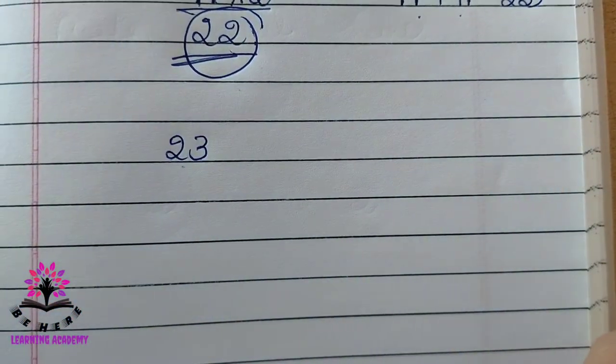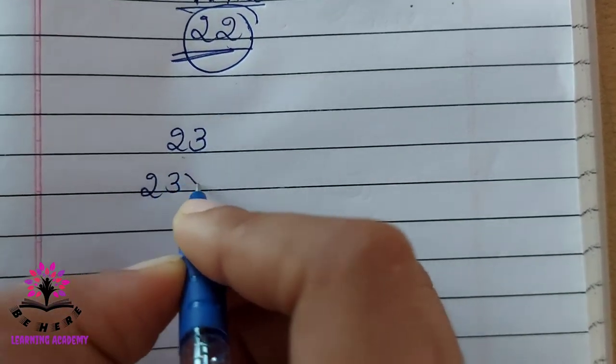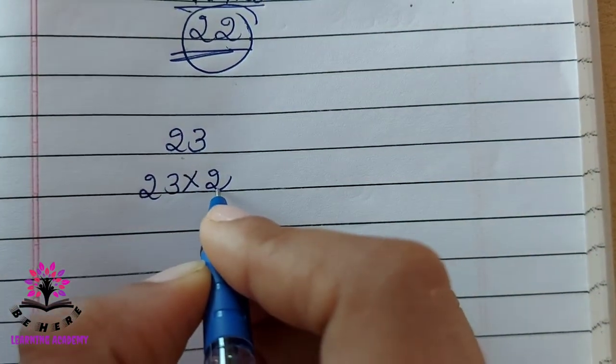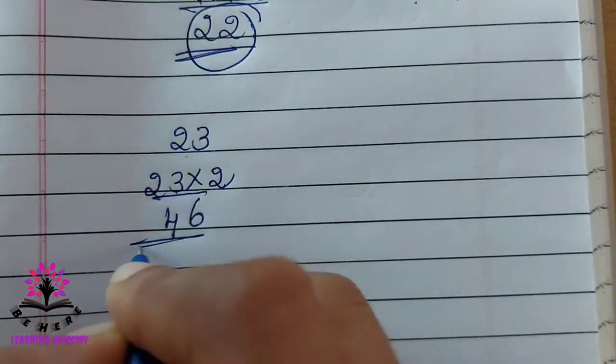Consider 23. You have to double this number. Either you can multiply by 2. 2, 3 is 6, 2, 2 is 4. So 46 will be the answer.